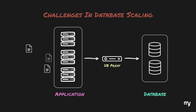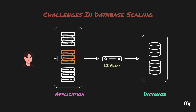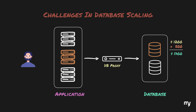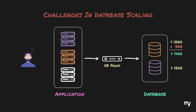But here is where the real challenge begins. Imagine this scenario: a person transfers $500 from their account to a friend's account using a banking app. The request goes to server B, which sends a write query to the database proxy. The proxy routes this query to database 1, where the account balance of the friend is updated. A few hours later, the friend logs in to check their balance. The request is handled by server A, which queries database 3 — but this instance does not have the updated information, leading the friend to think that the money has not been transferred yet. This is a classic example of data inconsistency.